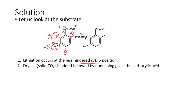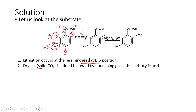That is the reason secondary butyllithium abstracts the proton from that particular carbon, ending up with lithiation at the ortho position. The second step is dry ice or solid CO2 addition. The CO2 adds to the position where the lithium was present, and hydrolysis leads to the carboxylic acid derivative. This is the final product formed in this particular reaction.